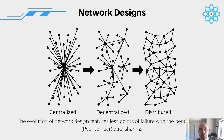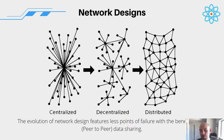There are layered networks where different protocols work side by side — like TCP/IP — all working together. What we're primarily focused on is a consensus protocol for transactions and voting rights, the ability to represent yourself pseudonymously. The evolution of network design features fewer points of failure with the benefit of peer-to-peer data sharing, so there's no one central server to shut everything down.